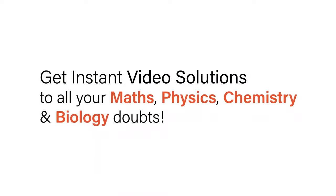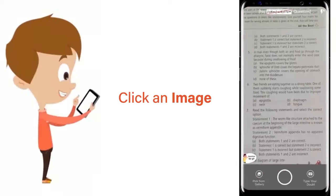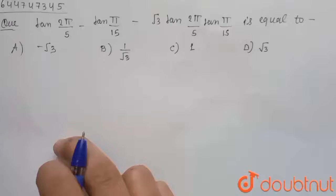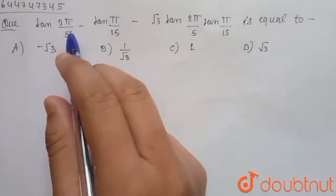With Doubtnut, get instant video solutions to all your math, physics, chemistry, and biology doubts. Just click the image of the question, crop the question, and get instant video solutions. Download Doubtnut app today. The question is: tan 2π by